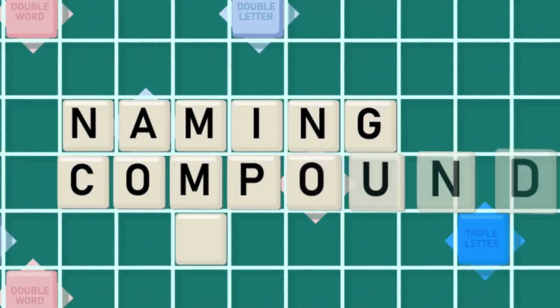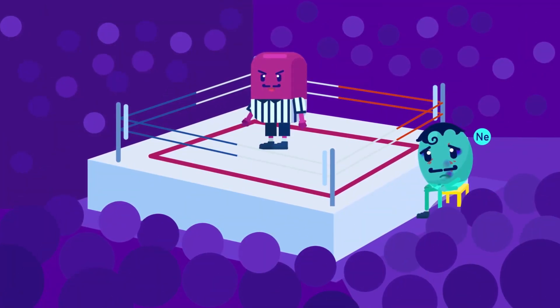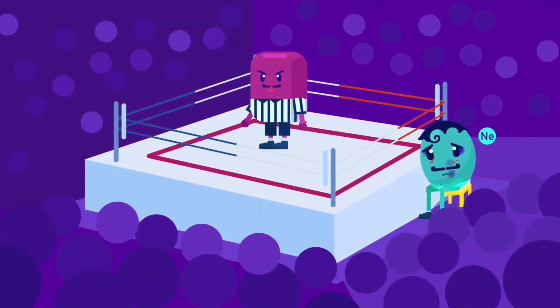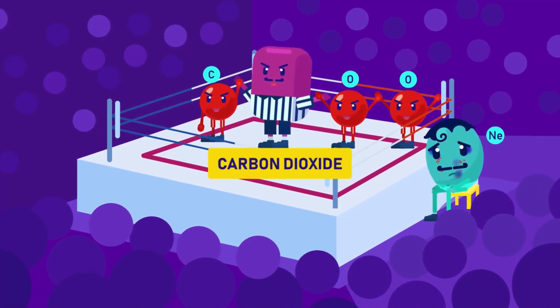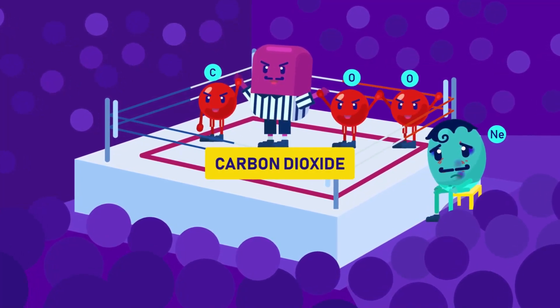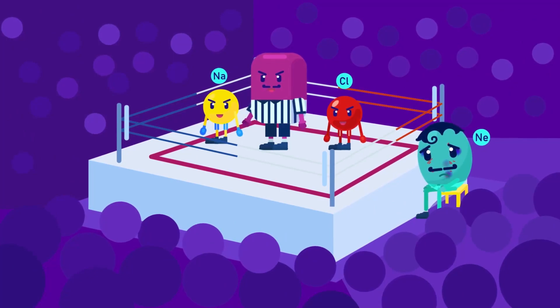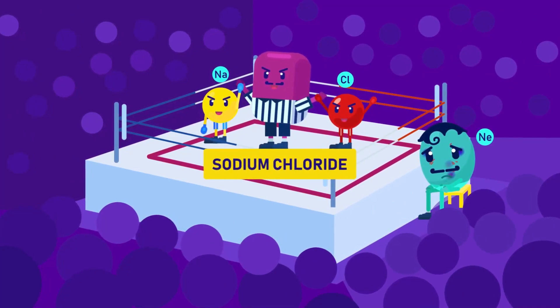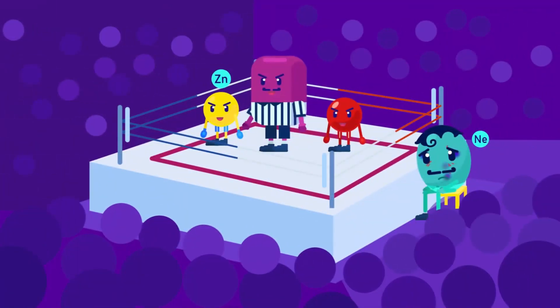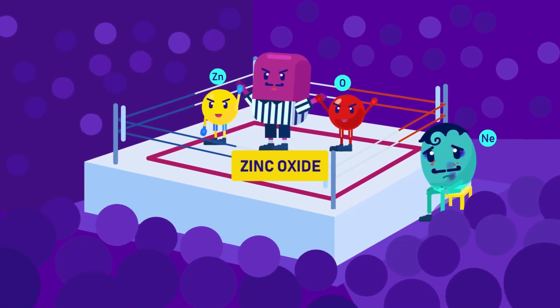Naming compounds is relatively straightforward. For example, carbon and oxygen combine to form carbon dioxide. Sodium and chlorine chemically combine to make sodium chloride. And zinc and oxygen form zinc oxide.